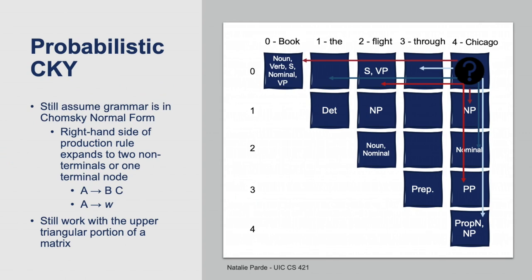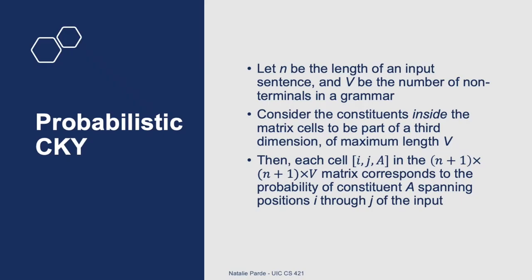Probabilistic CKY is very similar to the classic CKY algorithm we've already discussed. It still assumes that it's working with a grammar that's in Chomsky normal form, and it still works by systematically computing values along the diagonals in the upper triangular portion of a matrix. Where it differs is that it considers an additional dimension corresponding to the probabilities of different constituents occurring.